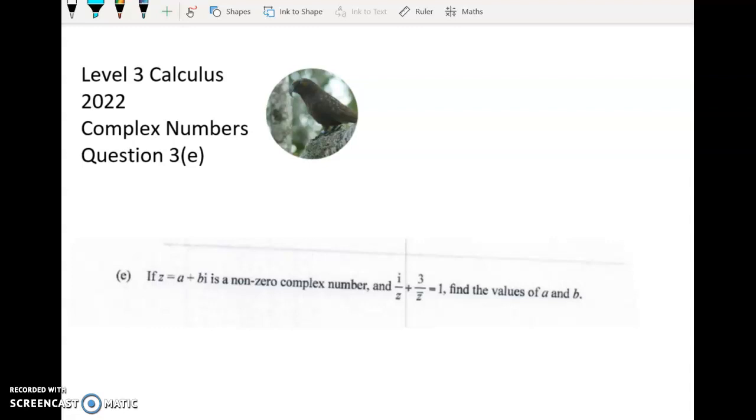Kia ora koutou. Here's another question that I think is the excellence question from question 3 of this year's complex numbers paper. Sorry about the bad quality of the question, I've just grabbed it from a screenshot because I haven't got an official copy of the paper yet. So we're told that z is a non-zero complex number and we're told to use a plus bi for it, and we've got i over z plus 3 over the conjugate of z is equal to 1.